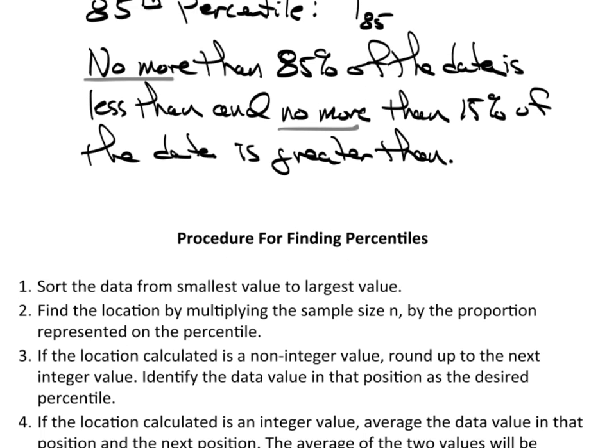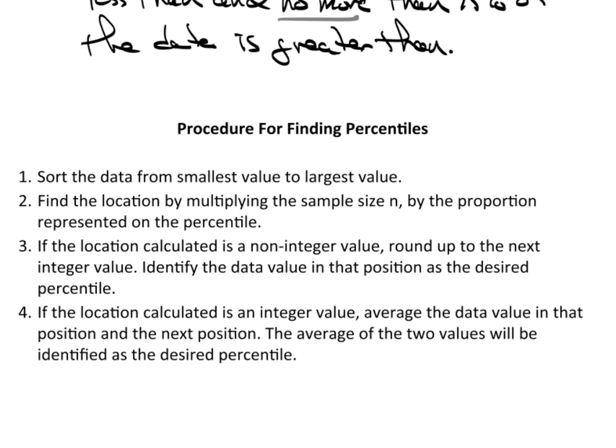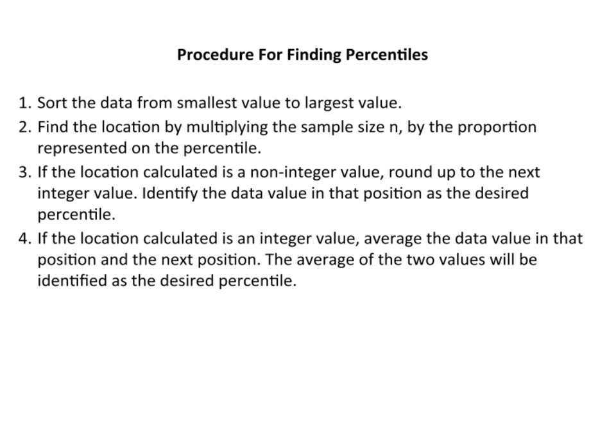So let's go ahead and go over the procedures for finding a percentile, then we'll work out an example. First thing you really need to do is sort the data from smallest to largest. It makes no sense whatsoever to calculate a percentile when the data is not sorted, because the value you're going to find would be completely subject to the order you wrote the data down, which I could have written down differently, and someone else would have written it down differently, but yet it's the same data.